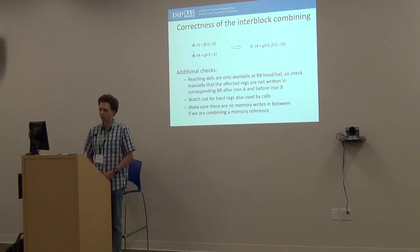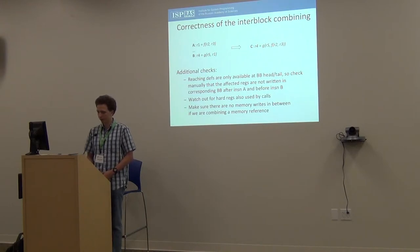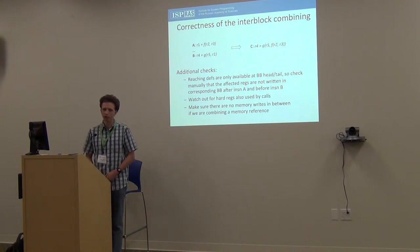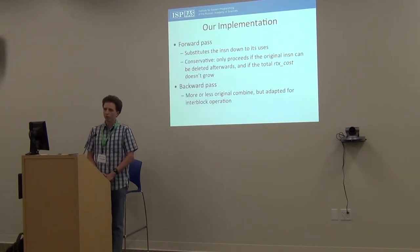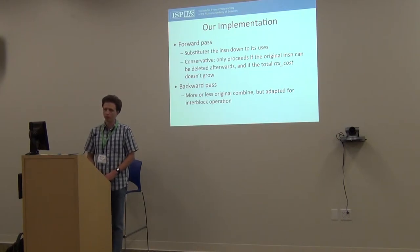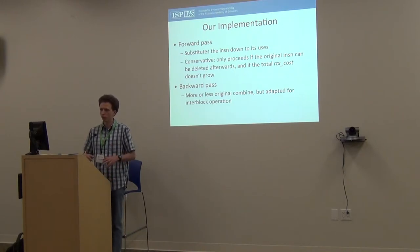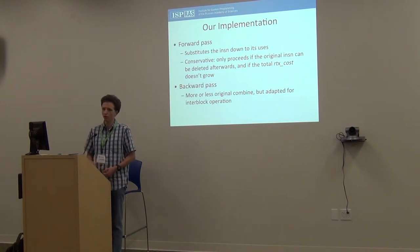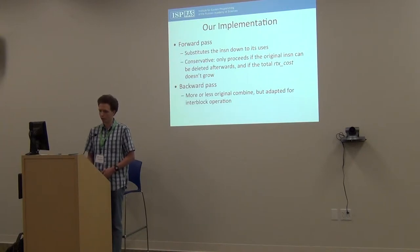Also, calls and call-used RTX are not traced by data flow, so we should take care of that. And if we are combining a memory reference, we should check that there is no memory write in between. First, we implemented a forward combined pass — a kind of hybrid of forward propagation and combine. We used a forward propagation driver that substituted instructions down to their users, but did it conservatively: only if all users of the instruction can be substituted. Then the original instruction will be removed, and we check RTX costs so it won't grow after the substitution.